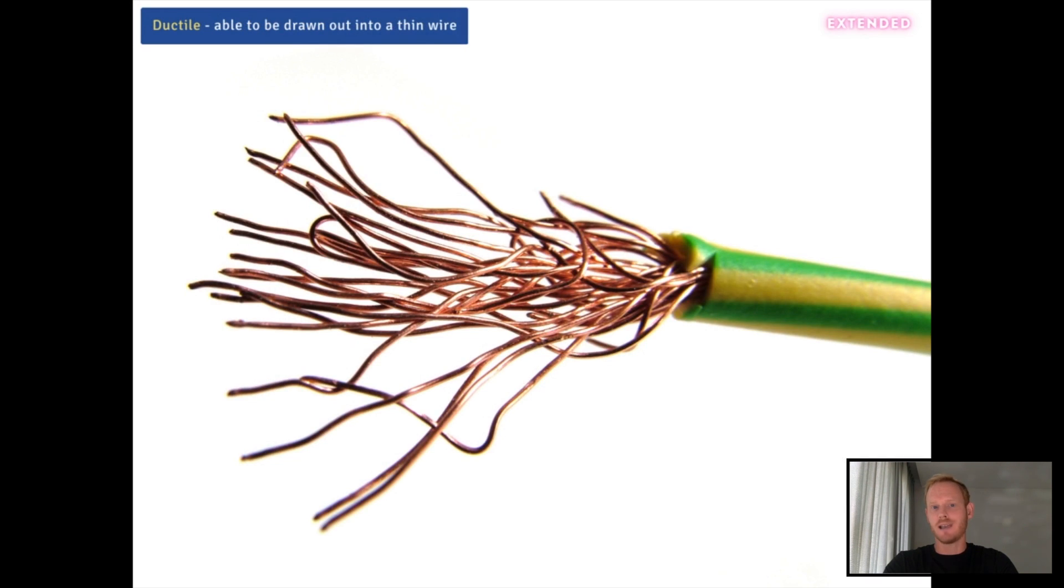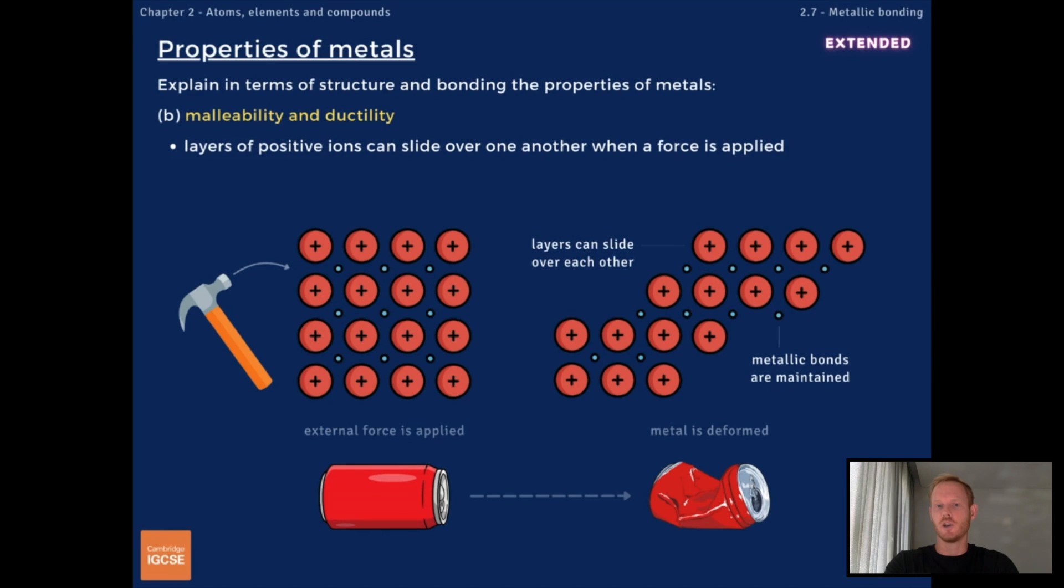They're also ductile, which means they can be stretched or drawn out into a thin wire without losing strength or breaking. These properties are due to the ability of positive metal ions to slide over one another when force is applied whilst still maintaining their attraction to the sea of delocalized electrons.